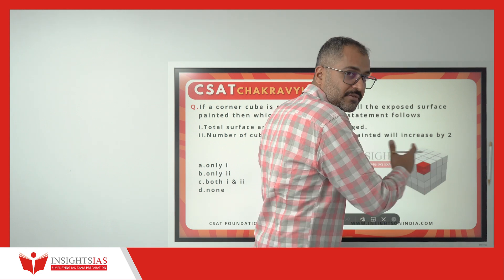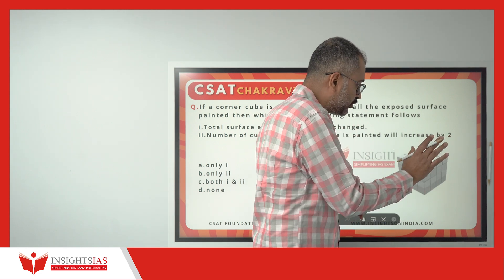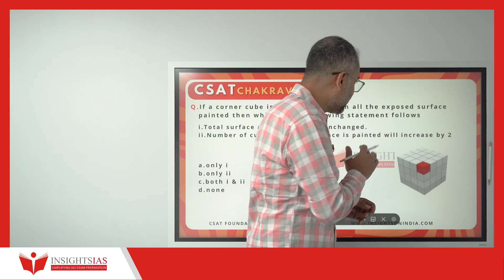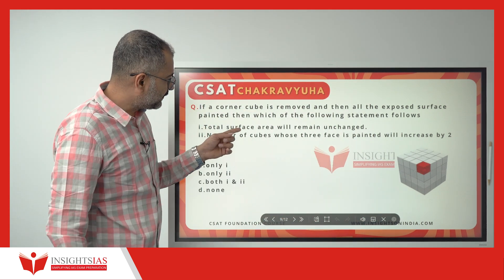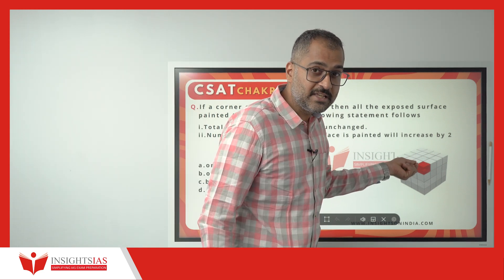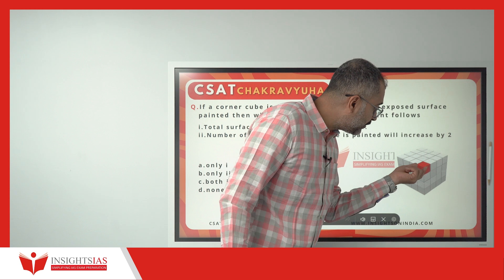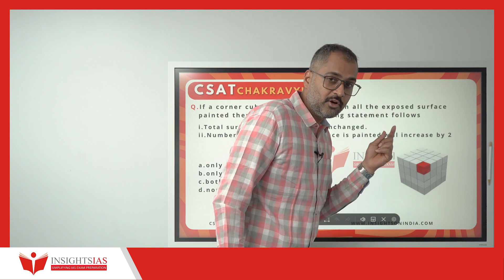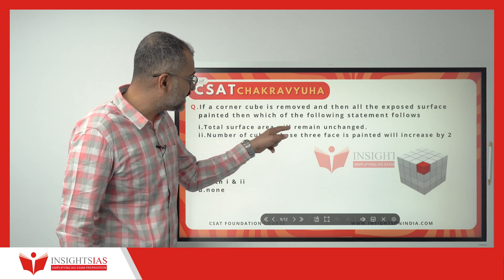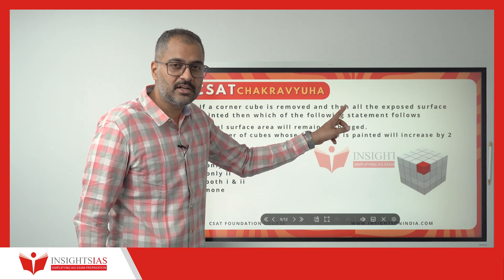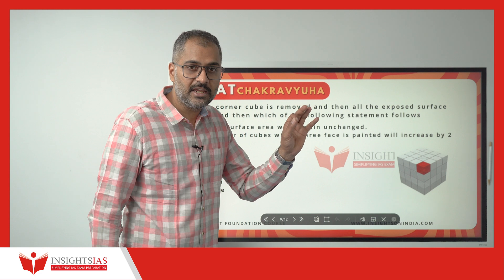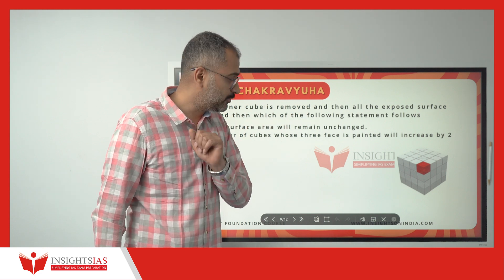You paint from all the faces, all the sides — whatever the exposed portion, the completely exterior part you paint it. After painting, the total surface area will remain unchanged. That is the question — whatever the surface area which was present before removing this smaller cube, after removing the smaller cube, will it remain the same or not? Whether this is true or false, we will find out.